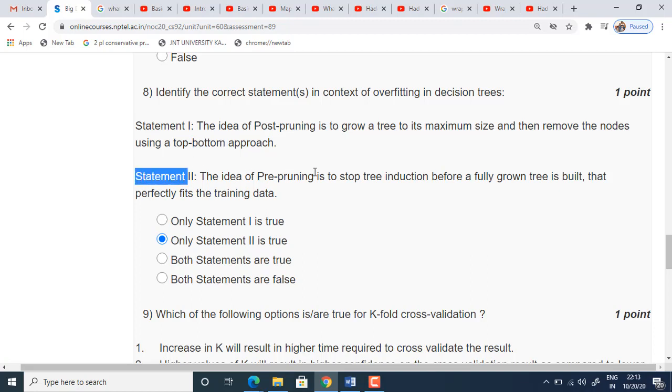Coming to statement two, the idea of pre-pruning is to stop tree induction before a fully grown tree is built that perfectly fits the training data. It is true. So only statement two is true. Okay, the second option.